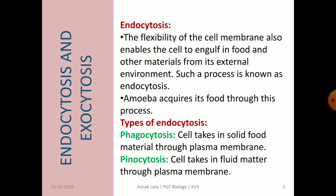The first topic is endocytosis and exocytosis. Let us start with endocytosis. Endocytosis is the process by which the cell membrane helps the cell to engulf food and other material from the external environment. This is only due to the flexibility of the cell membrane. Amoeba gets its food by endocytosis. Endocytosis is of two types.